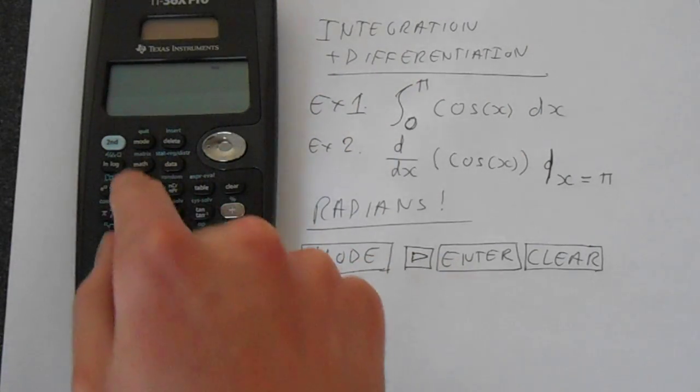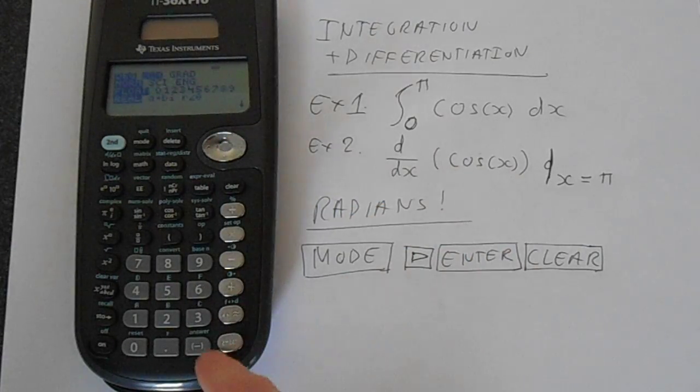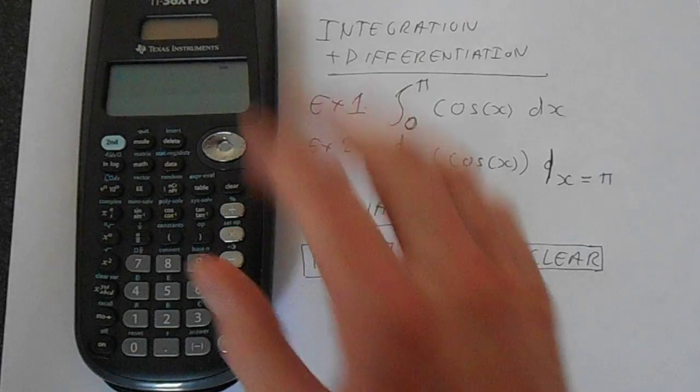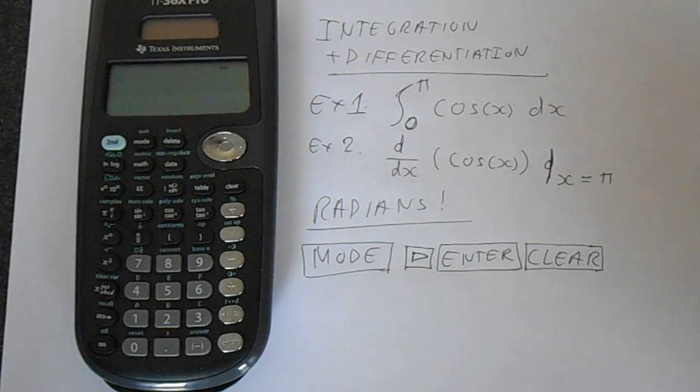Set the calculator in radians for all these calculations by default. To do this, go to mode, go across to radians, enter, and then press clear to get rid of this on the screen. We're now in radians mode so things will make more sense.